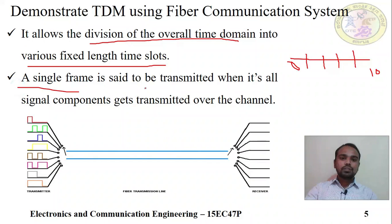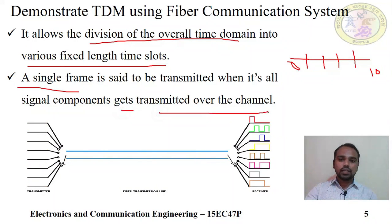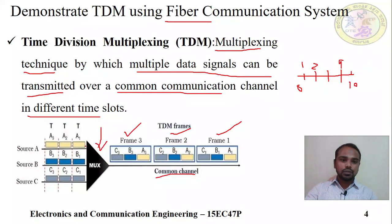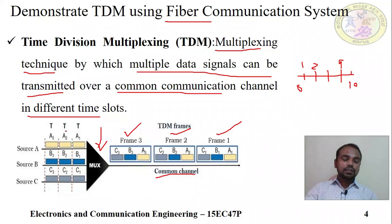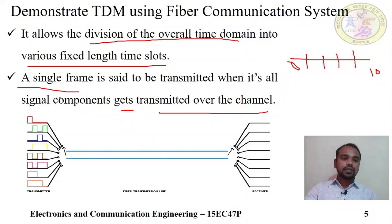A single frame is said to be transmitted when all its signal components are transmitted over the channel. For example, A1, B1, C1 — these three components from three sources are transmitted completely; that is one frame. Similarly, A2, B2, C2 transmitted together is the second frame. Then only it is called one complete frame.